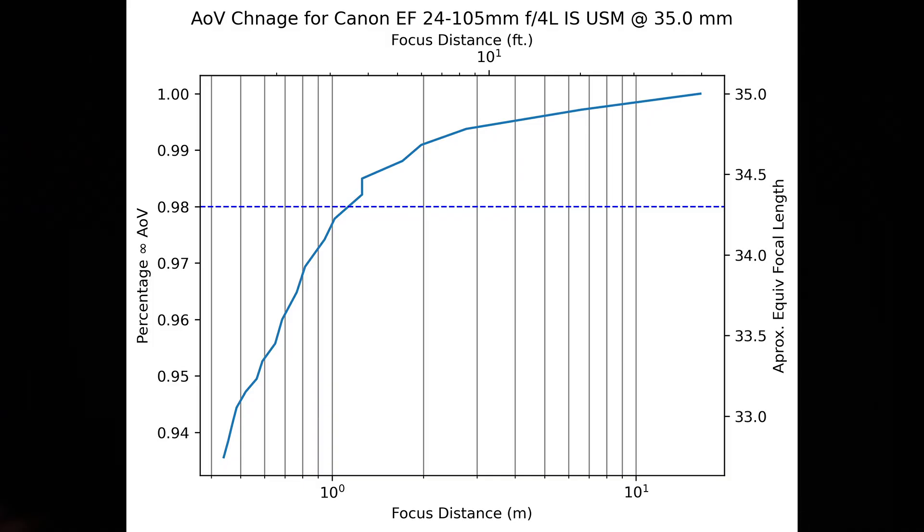Zooming to the next position, or 35mm, the total angle of view shift is now increased to approximately 6.5%, again, wider as the lens focuses closer to the camera. And with both the focal length and the total amount of angle of view shift increasing, it's actually somewhat surprising to me that the 2% threshold is still at just over 39 inches, or approximately 1 meter.